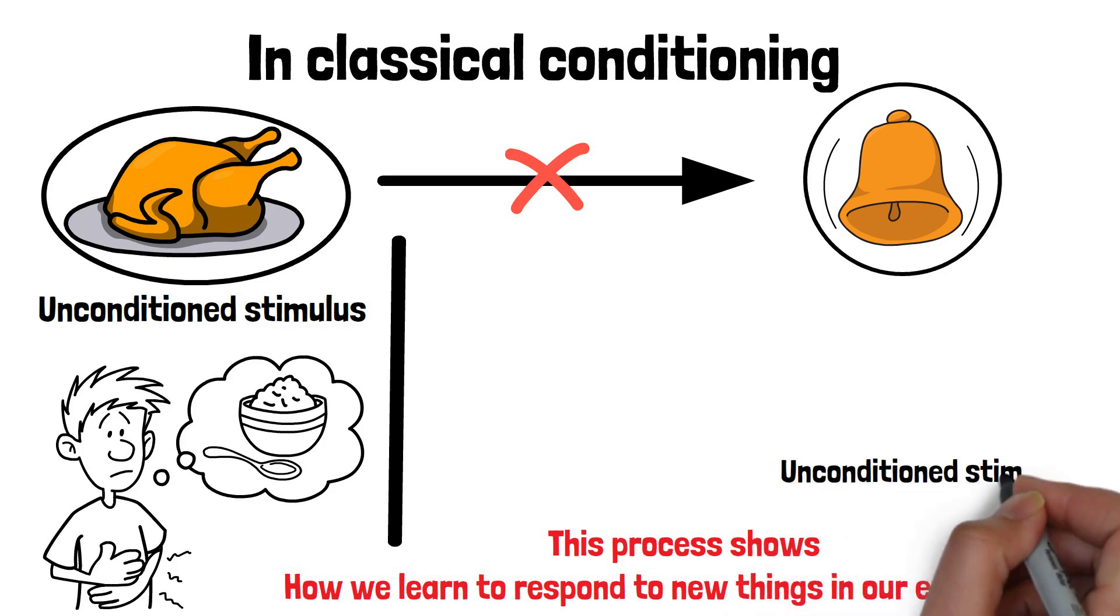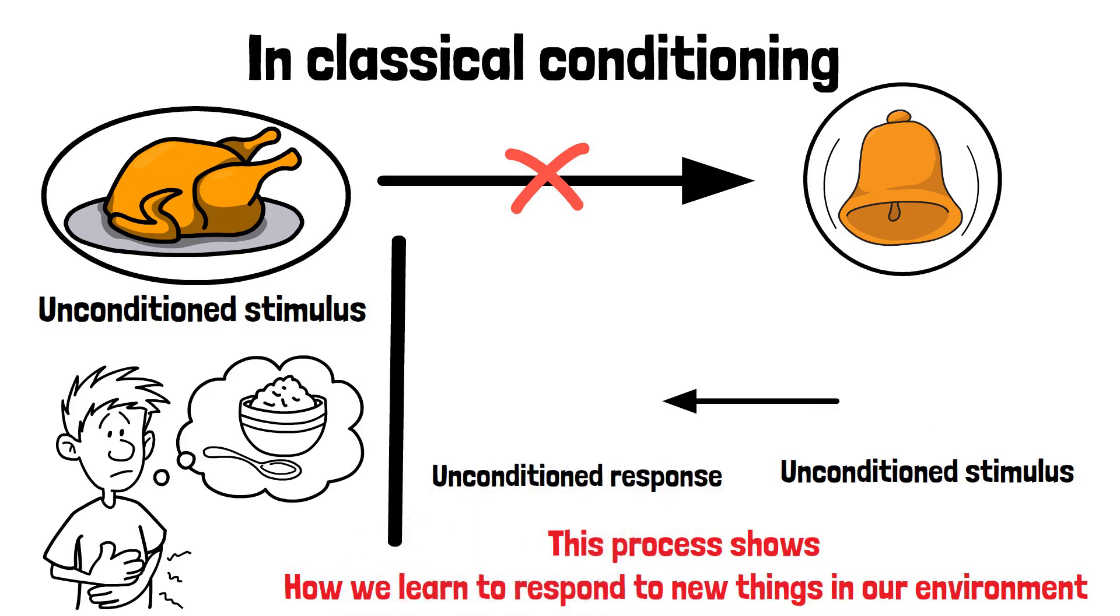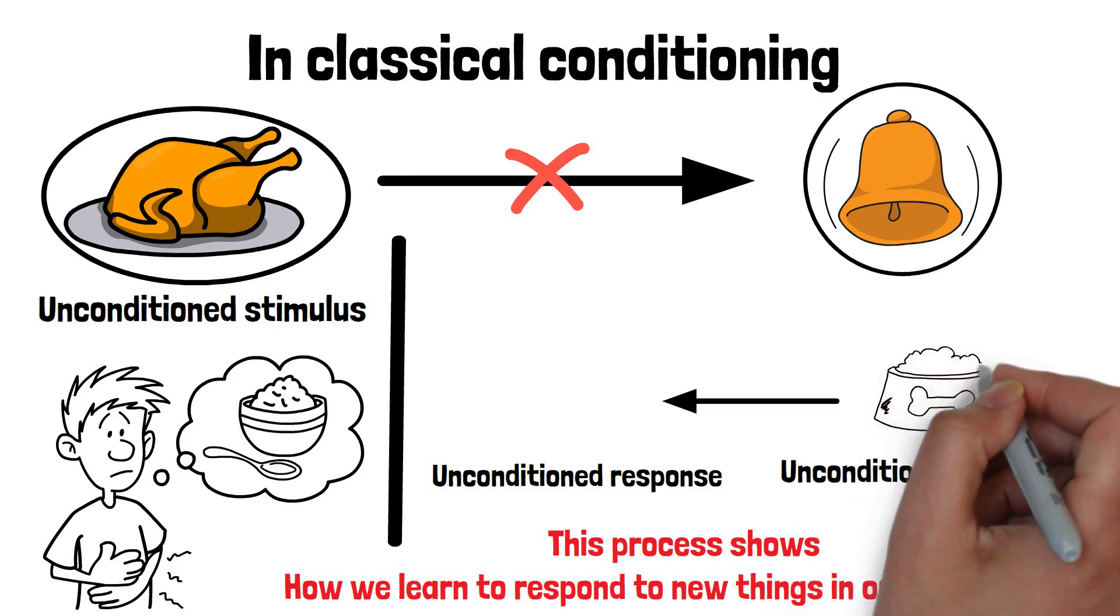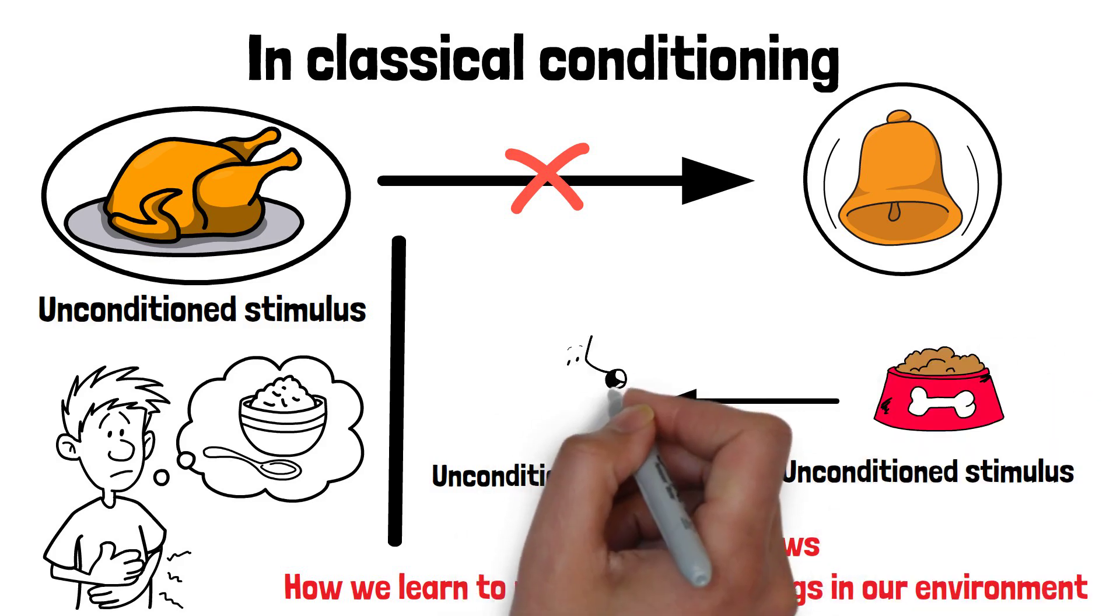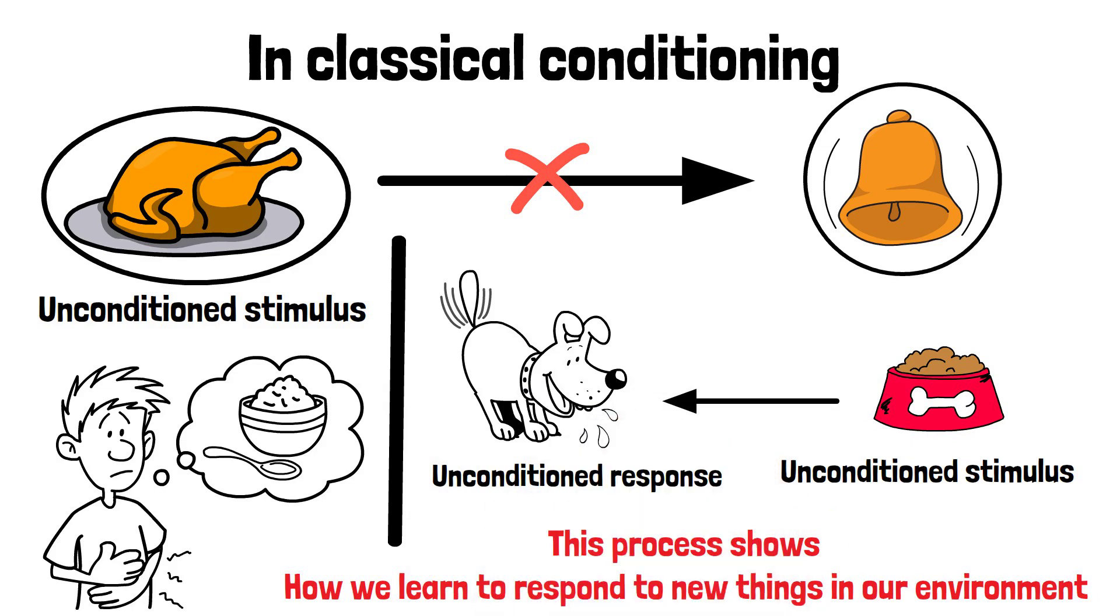The unconditioned stimulus is important because it naturally causes a reaction. This reaction is called the unconditioned response. For example, food is an unconditioned stimulus for a hungry animal because it naturally makes the animal salivate, which is the unconditioned response.